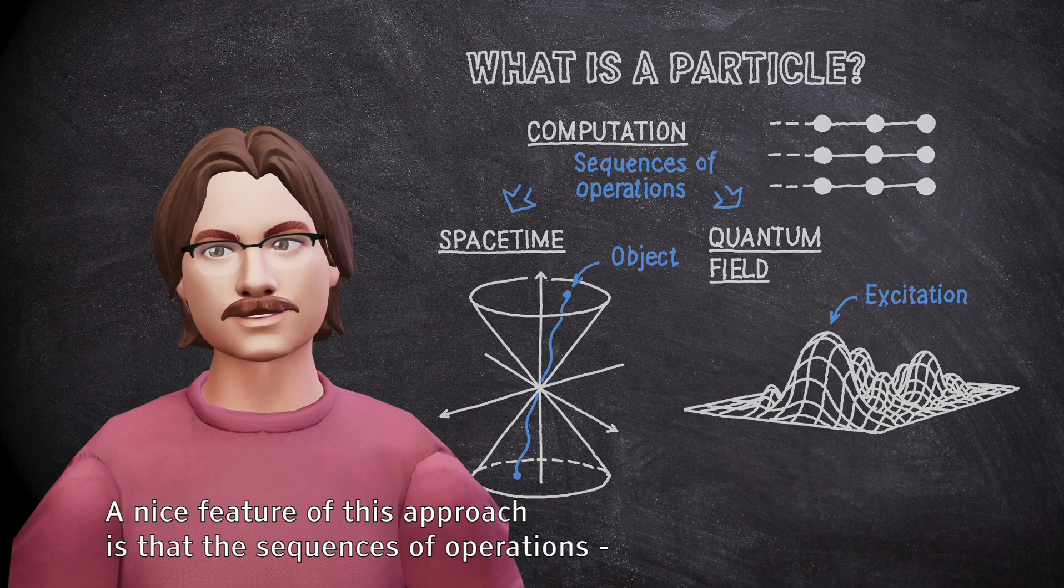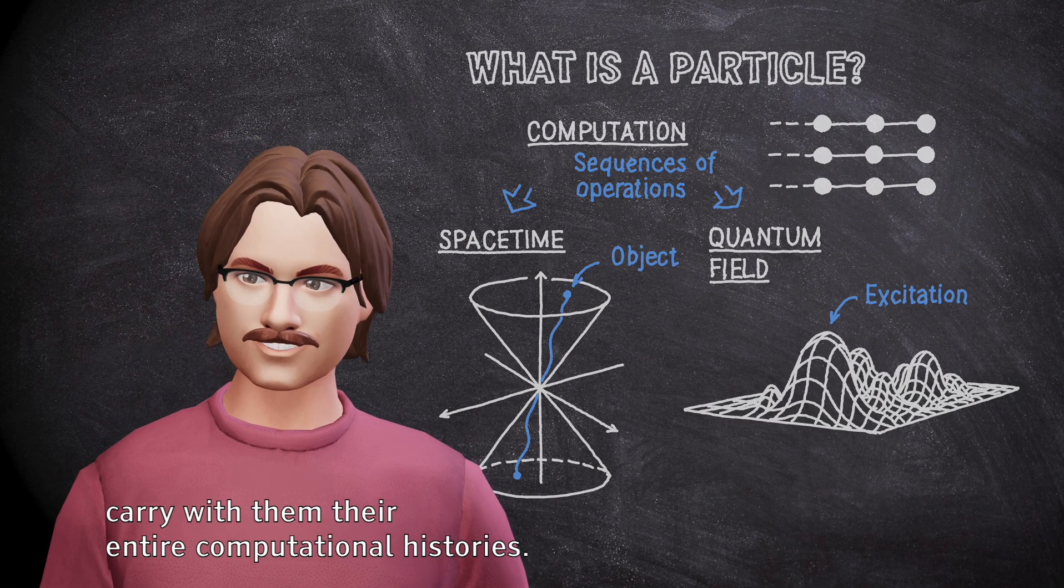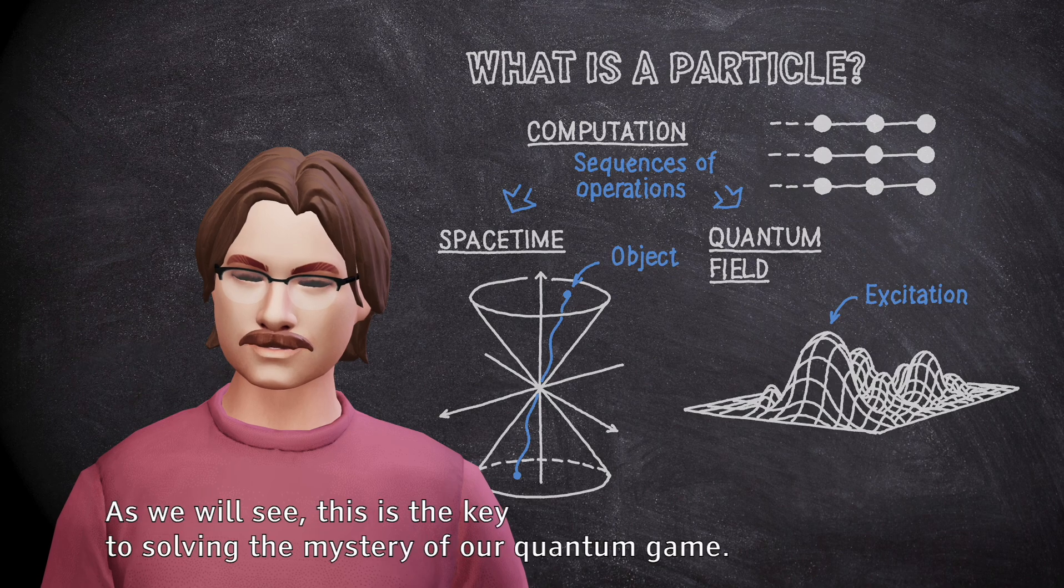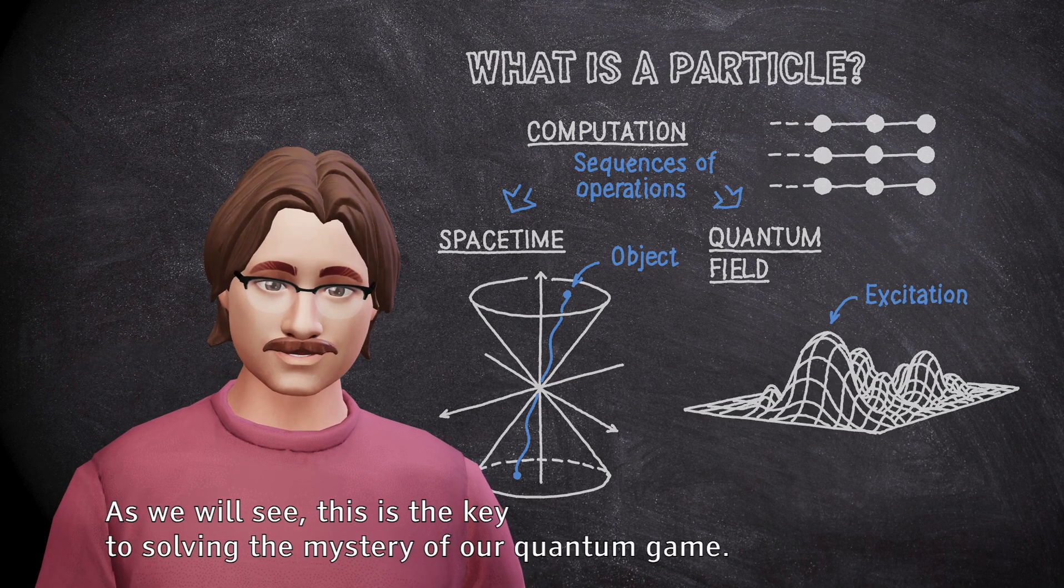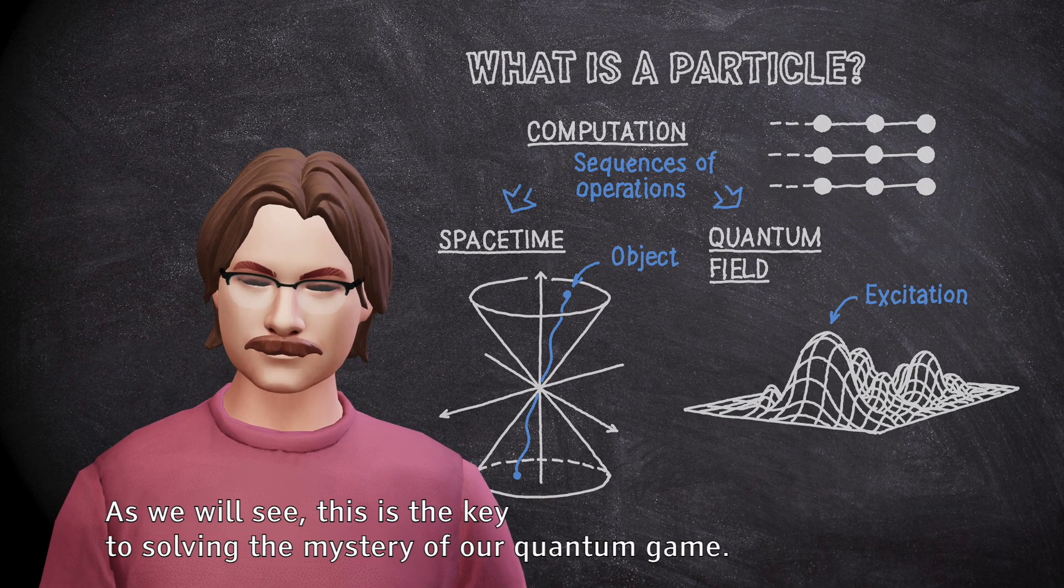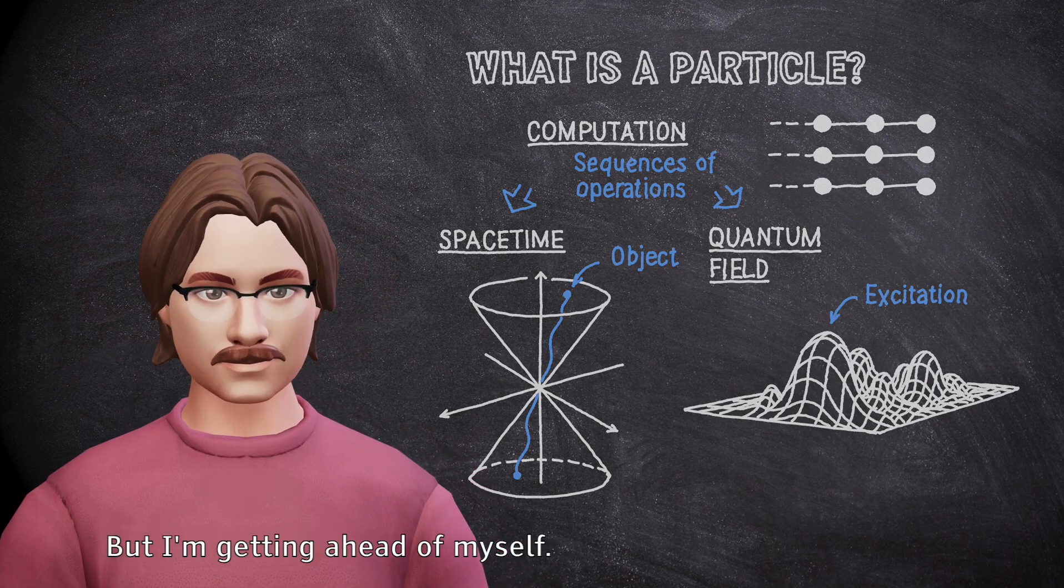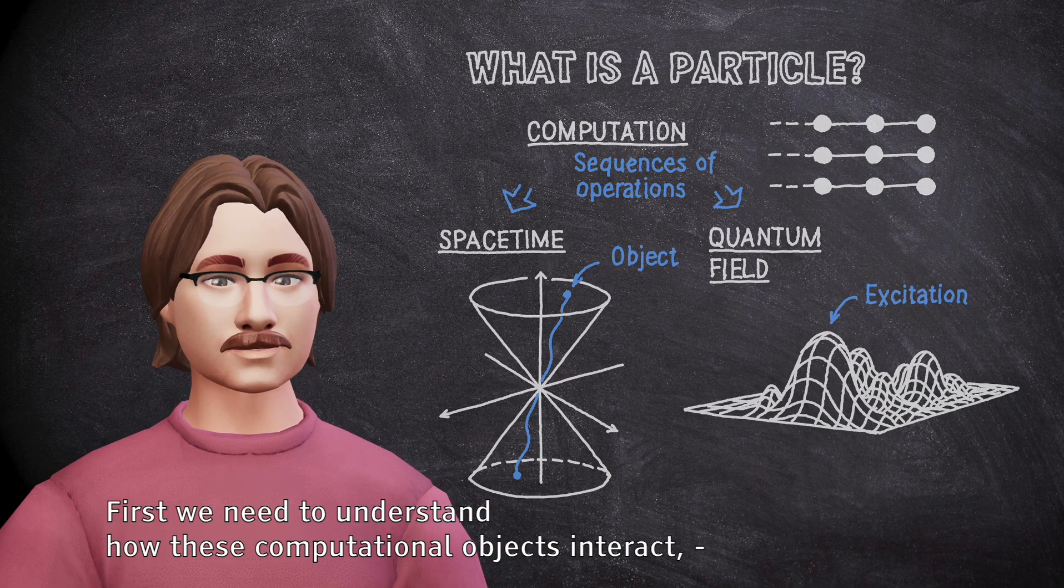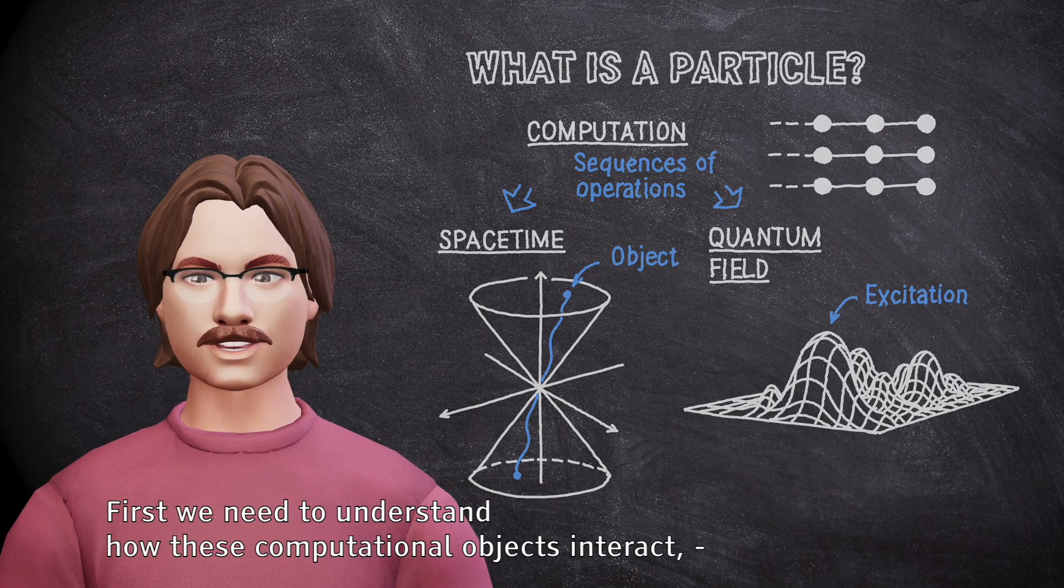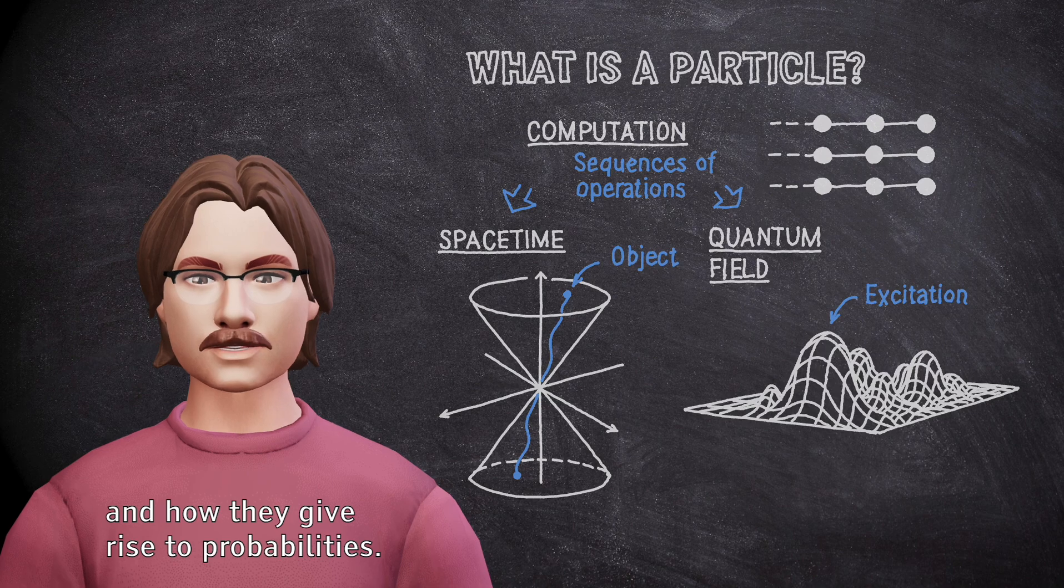Spacetime and quantum fields are just different projections of these computational objects. A nice feature of this approach is that the sequences of operations carry with them their entire computational histories. As we will see, this is the key to solving the mystery of our quantum game. But I'm getting ahead of myself. First we need to understand how these computational objects interact, and how they give rise to probabilities.